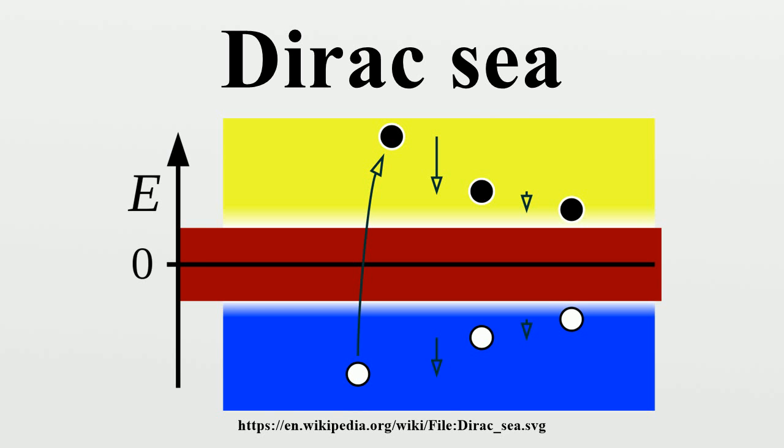The positron, the antimatter counterpart of the electron, was originally conceived of as a hole in the Dirac sea, well before its experimental discovery in 1932.